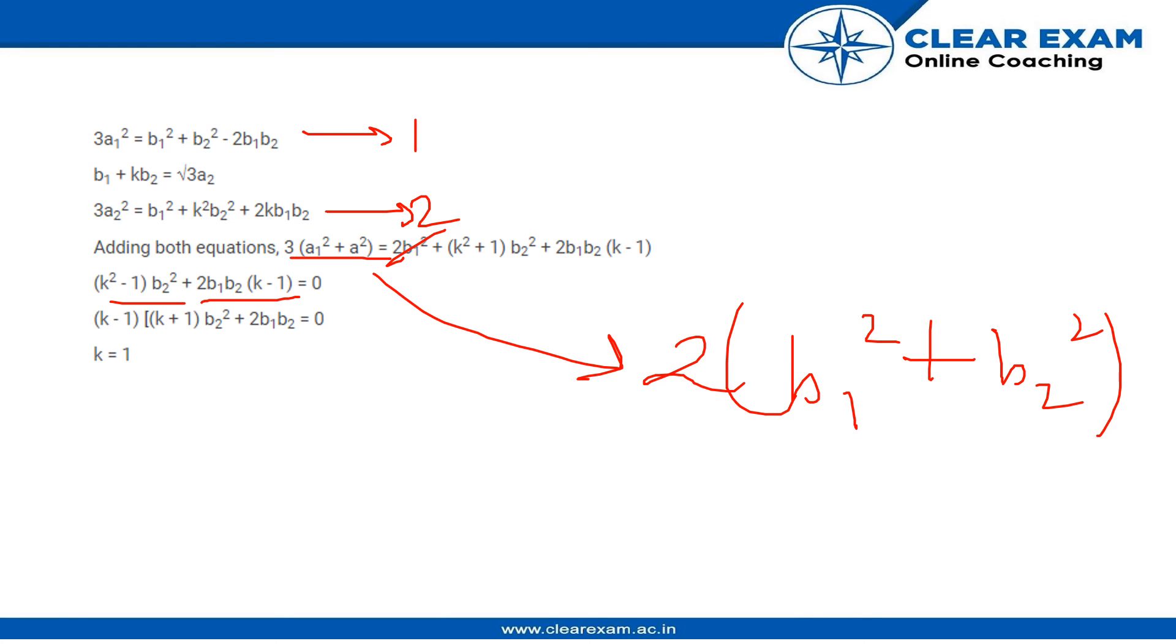Since (k + 1)b2² + 2b1b2 is not equal to zero, k minus 1 has to be zero, and thus the value of k becomes 1. Thank you.